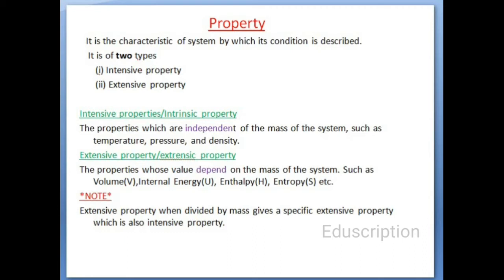Now the important one is the property. A property is the characteristic of the system by which its condition is described. Generally, thermodynamics has two types of properties: intensive property and extensive property. The intensive property is the property which is independent of the mass of the system — examples include temperature, pressure, and density.